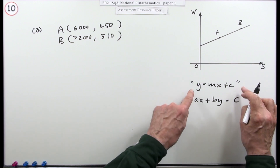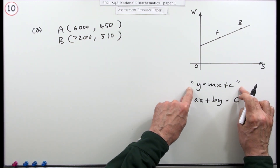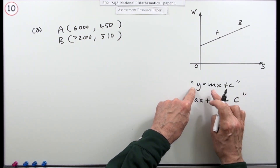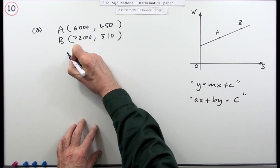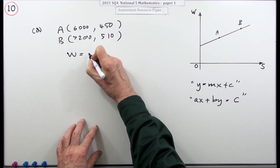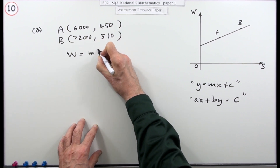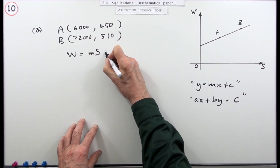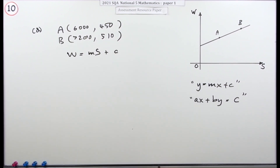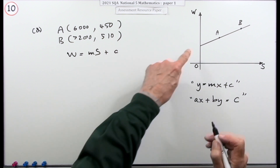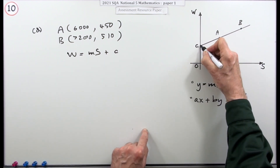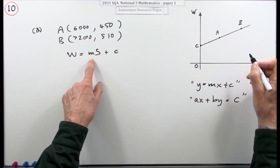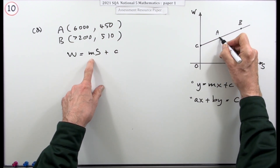I'm going for w equals ms plus c, where c is where the line cuts the vertical axis and m is going to be the gradient.